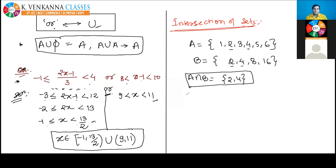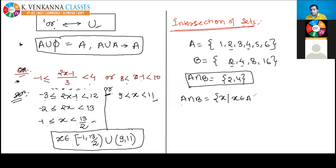The definition of A ∩ B = {x such that x belongs to A and x belongs to B}. The meaning of 'and' here is intersection.